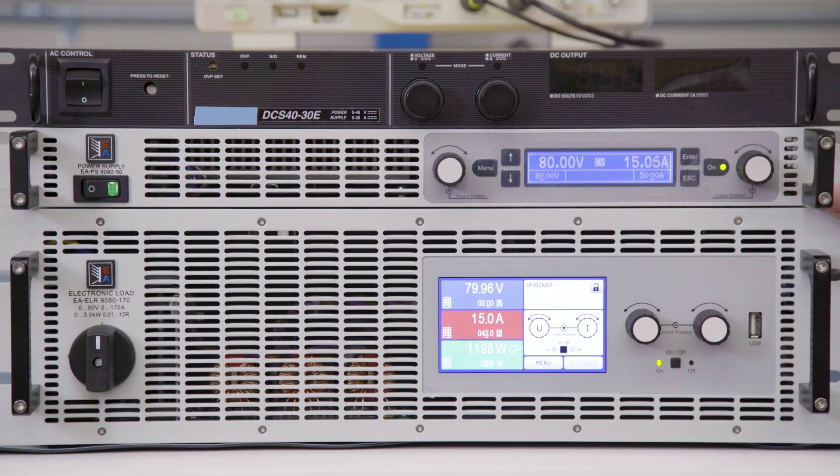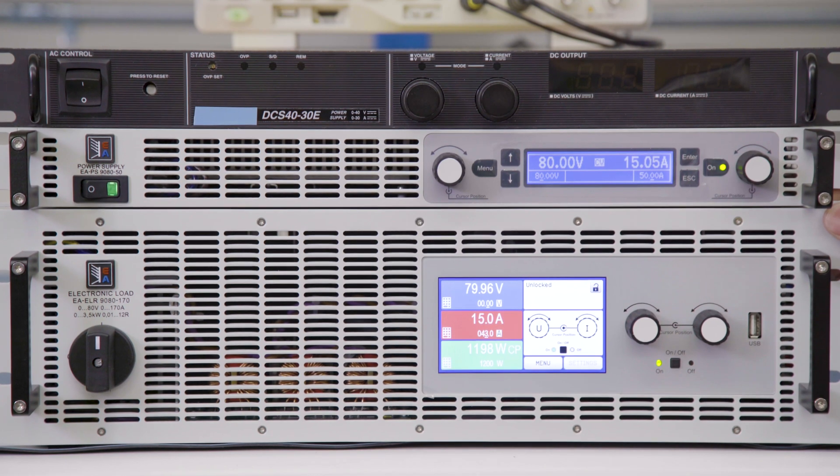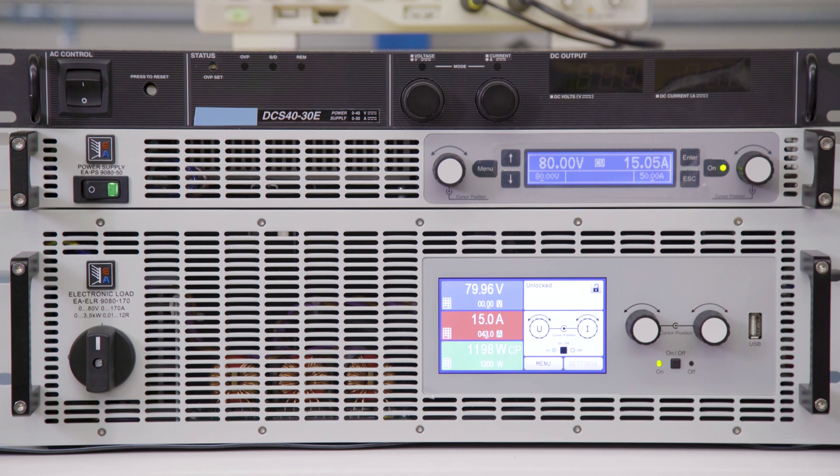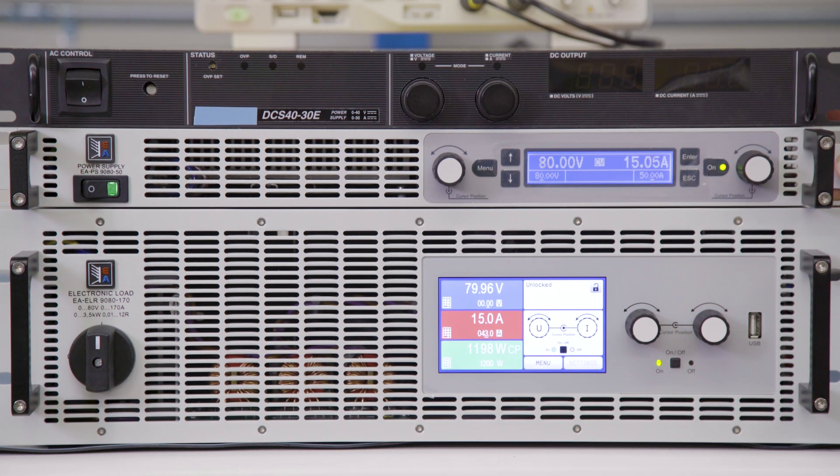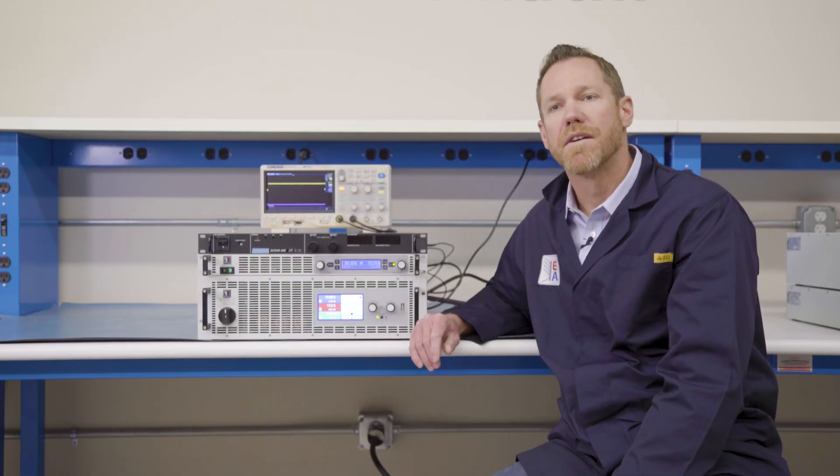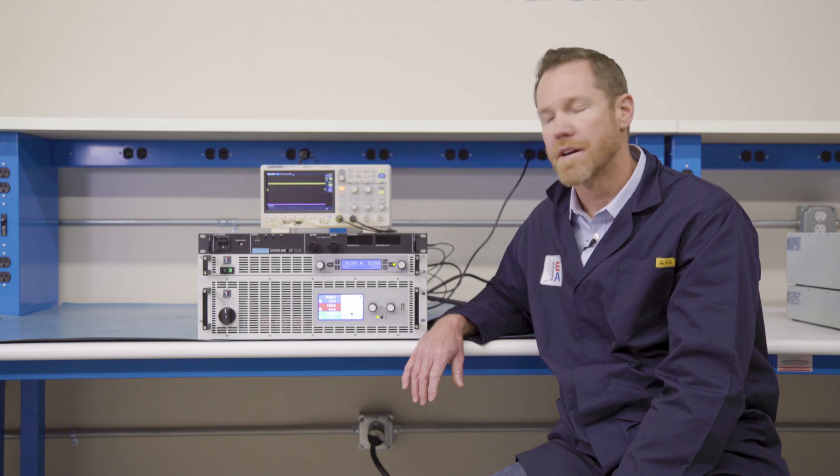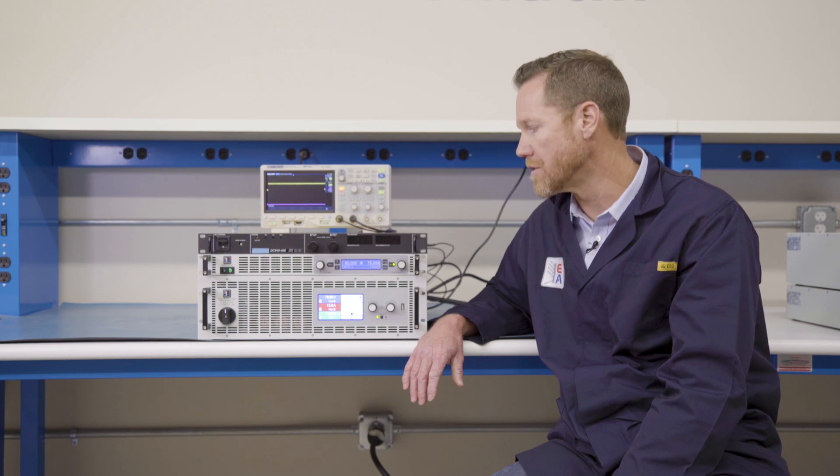So one of the things an auto-ranging power supply does is not only give you more current out of a similarly powered unit, but it also allows you to plan for the future and purpose and be able to use, say, a single power supply to maybe test multiple different product lines. So as you can see, as we've varied the voltage, the available current has increased and decreased to maintain that constant power across a wide range of voltage.